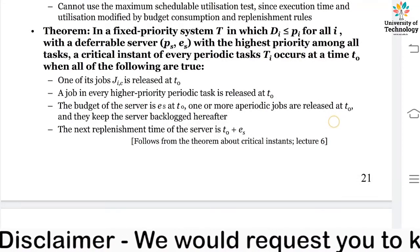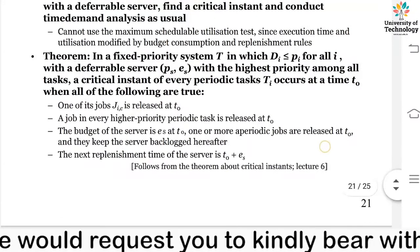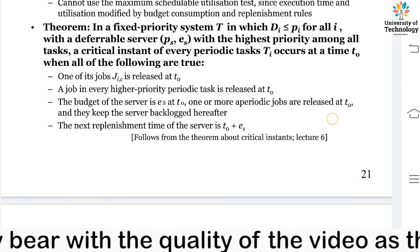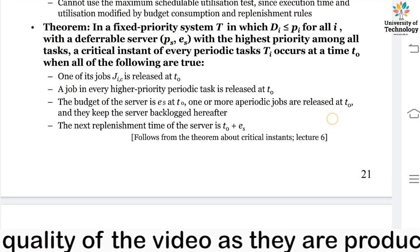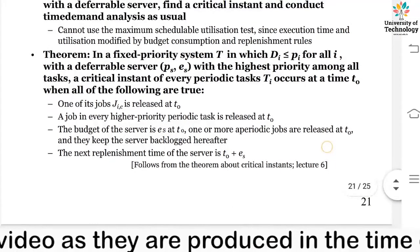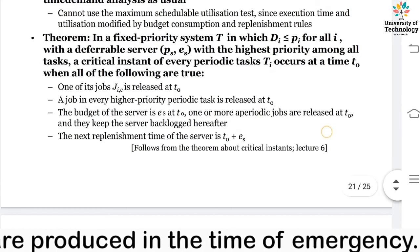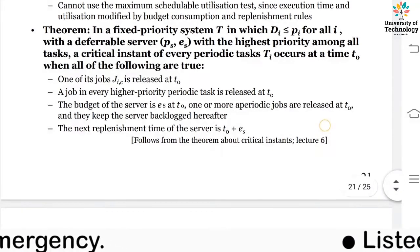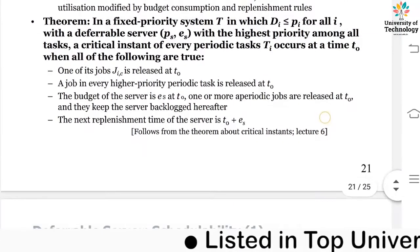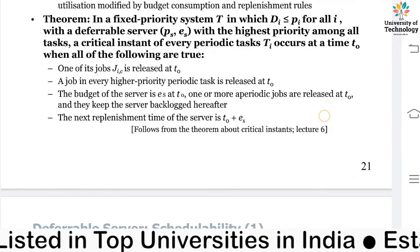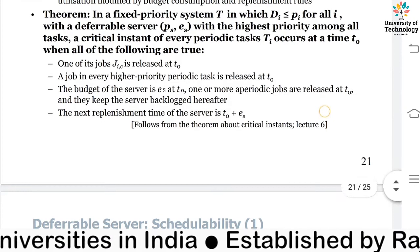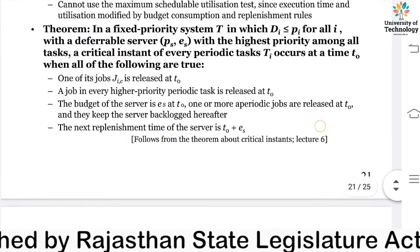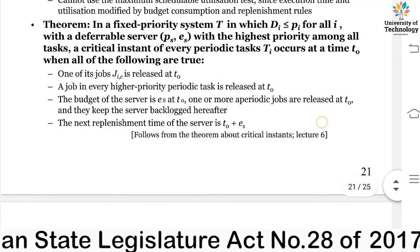A critical instant of every periodic task t_i occurs at time t_not when all of the following conditions are true. The first condition is that one of its jobs j_i is released at t_not — we consider that some job j_i is being released at time t_not.